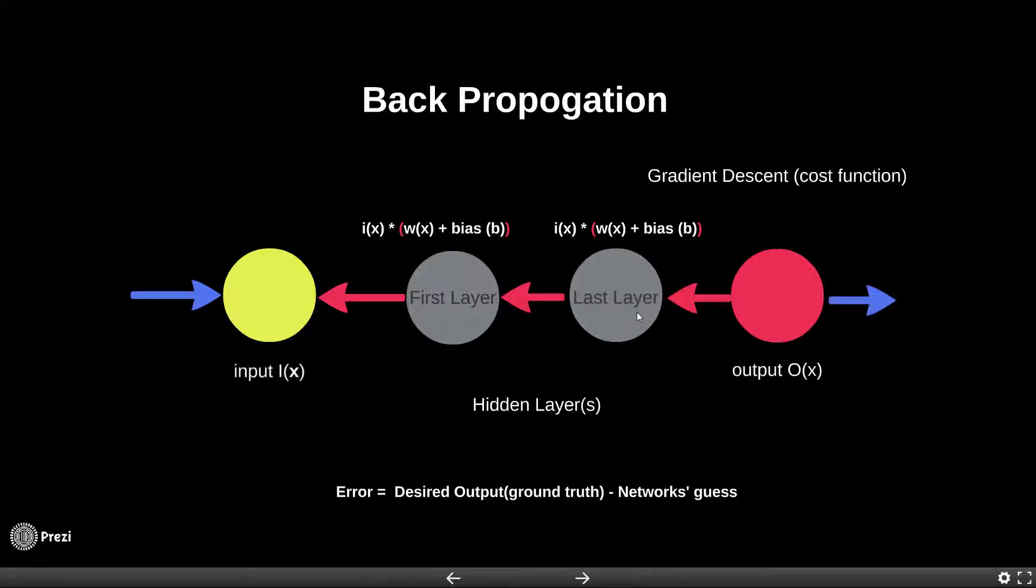So the back propagation method first changes the weights and biases in the last layer, and based on these changes, it changes the weights and biases on the next consequent layer looking backwards.